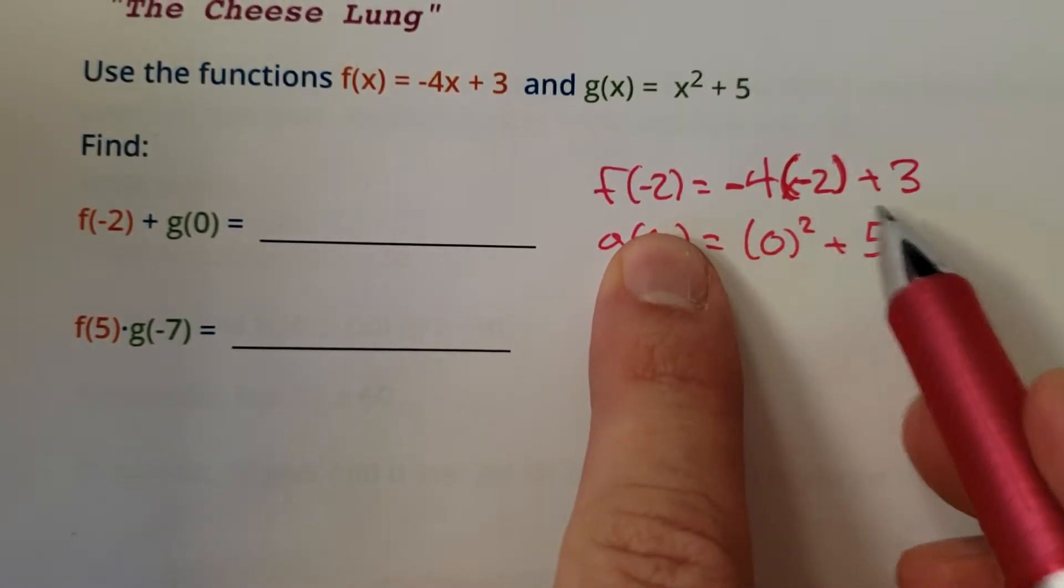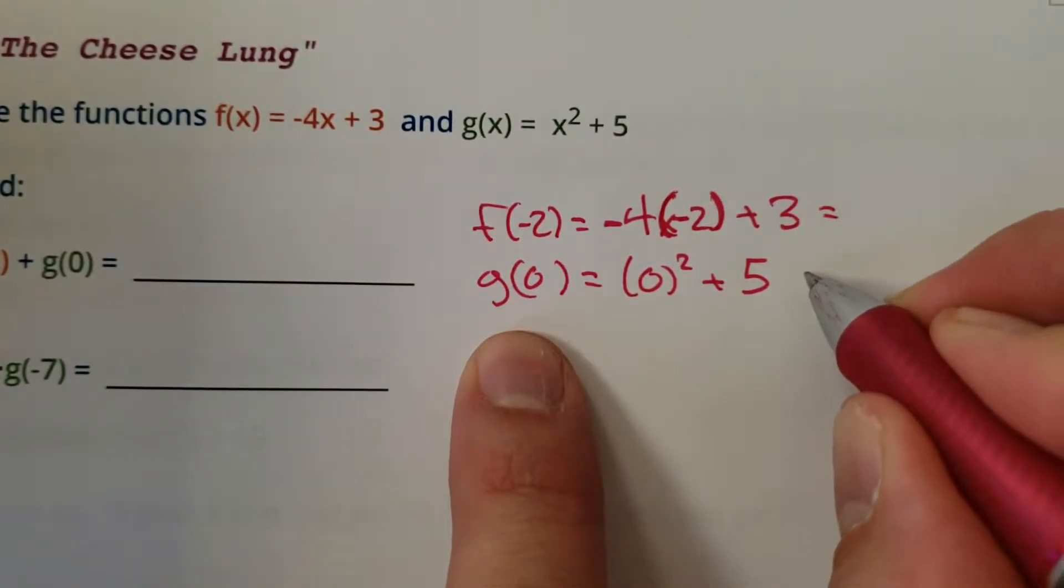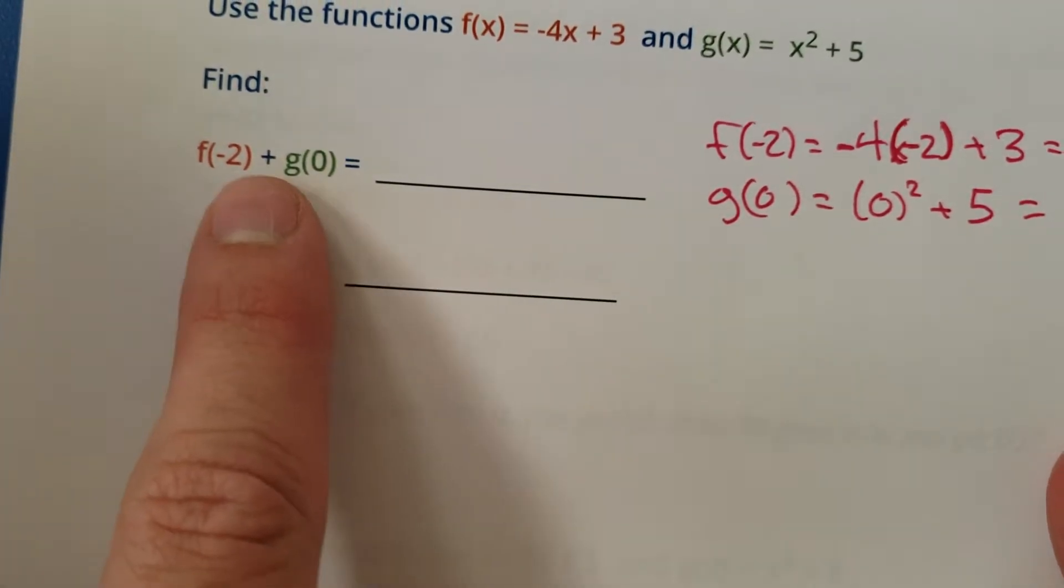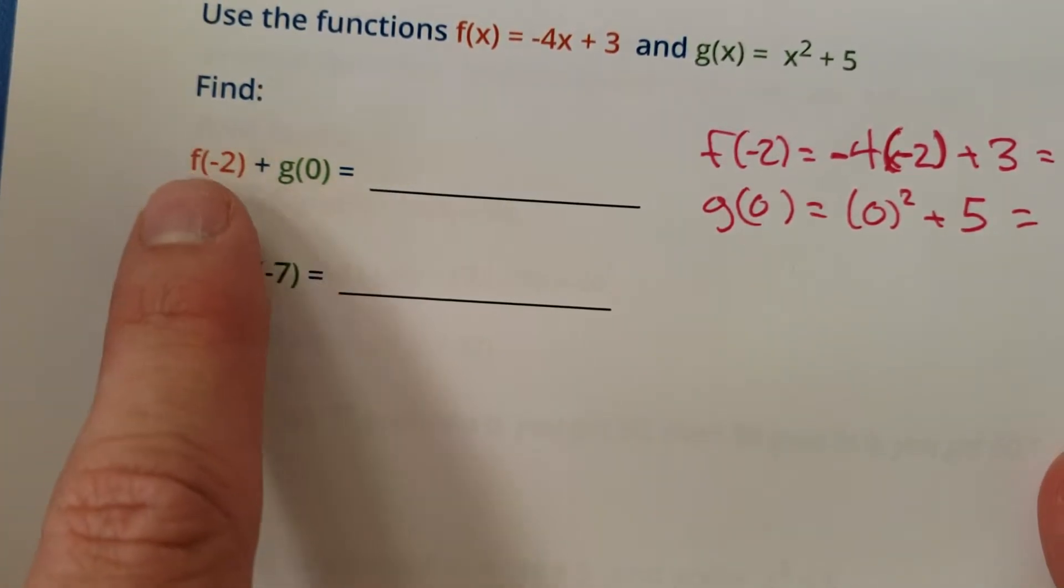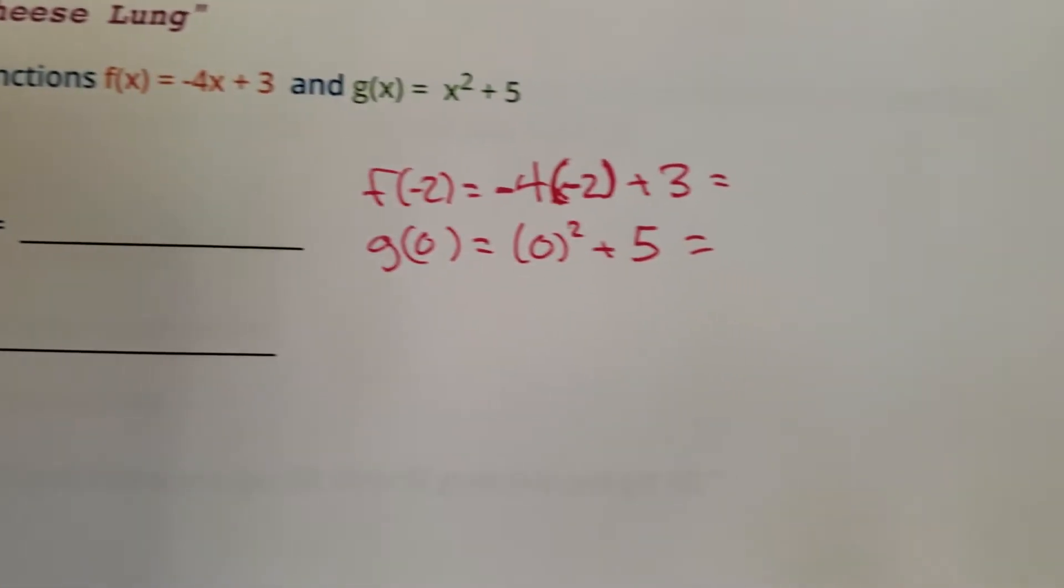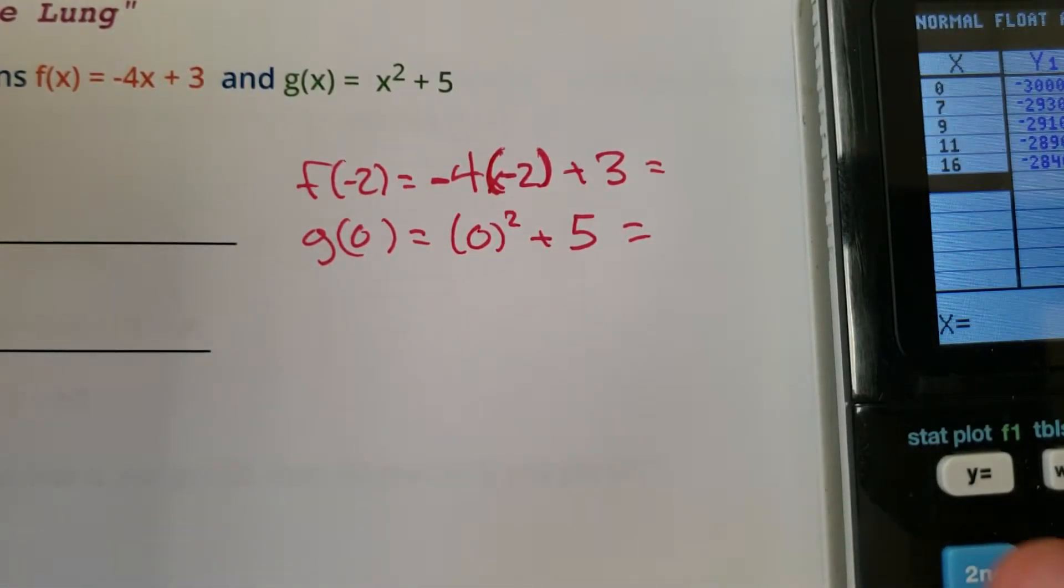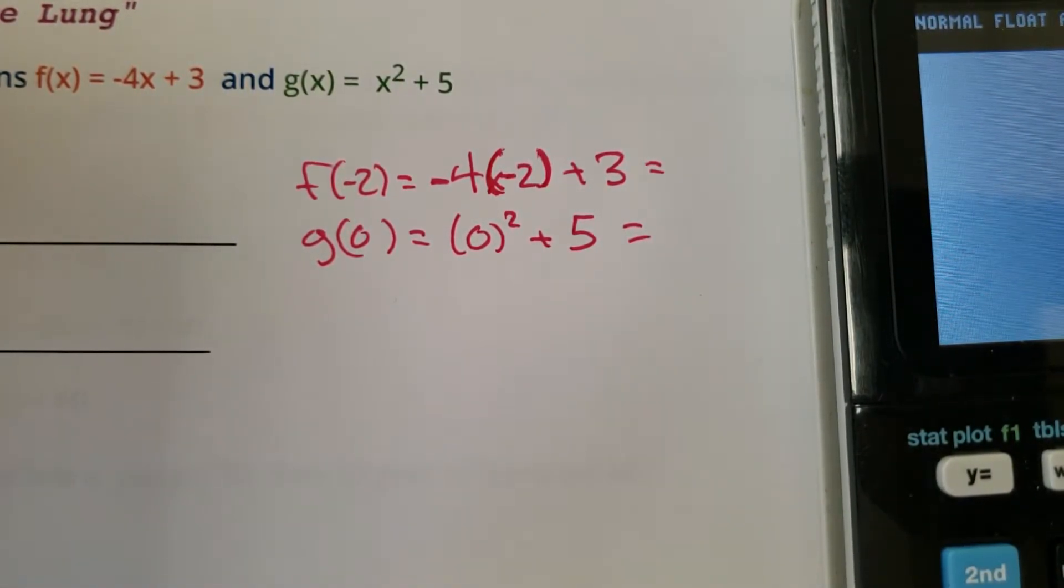Here we go. Plug in a negative 2, see what we get. Plug in a 0, see what we get. So we basically are doing two functions and then that plus sign means we got to add the results of our functions. So let's find them individually and we'll hammer this out when we get there. One step at a time.